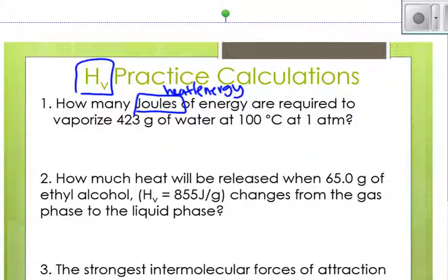That's a clue in the problem. Vaporize 423 grams of water. We're talking about water at 100 degrees Celsius. I would write this is the boiling point of water.